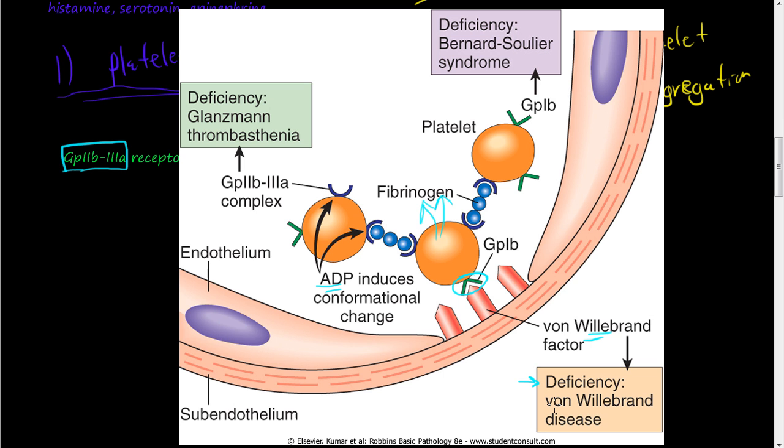But so this von Willebrand's disease is where you don't have this von Willebrand factor. This Bernard-Soulier syndrome is where you don't have this receptor. And then there's Glanzmann thrombasthenia is you have this complex here that you don't have.